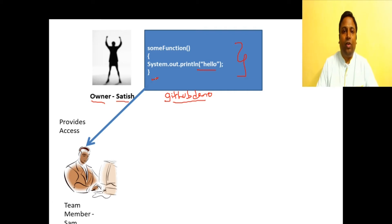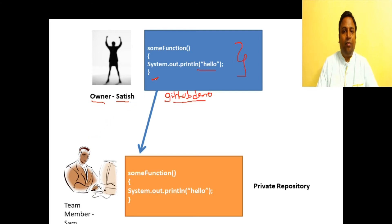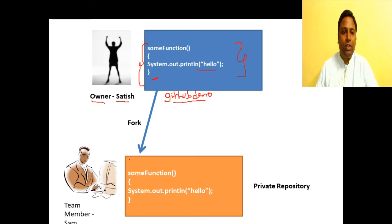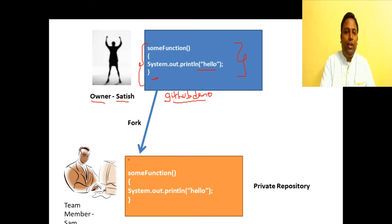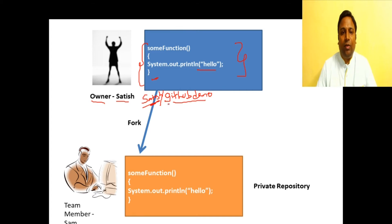Sam looks at the code and finds that Satish has a bad practice — he hasn't given a single comment in his code. Sam wants to propose a change: adding a comment line. Before making changes, Sam issues a fork request. The entire repository along with its files is copied into Sam's private GitHub profile.